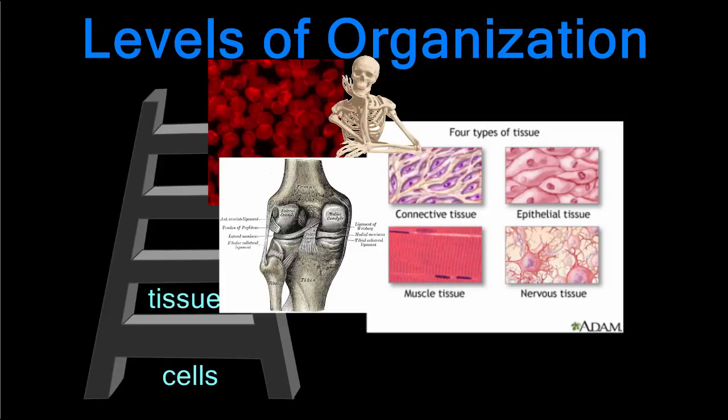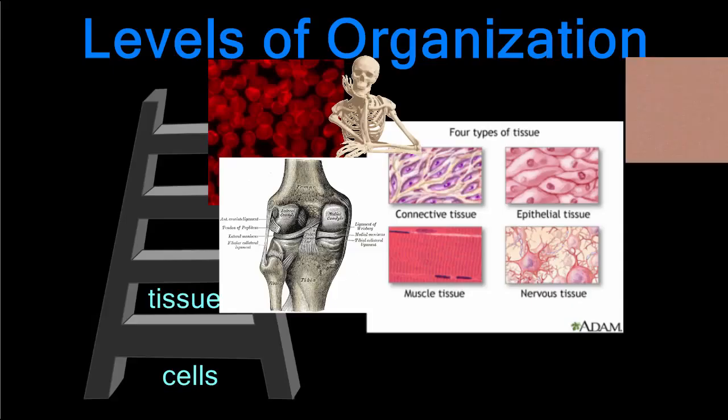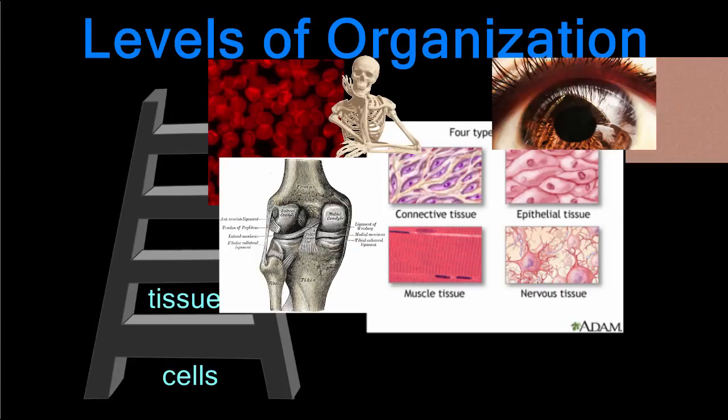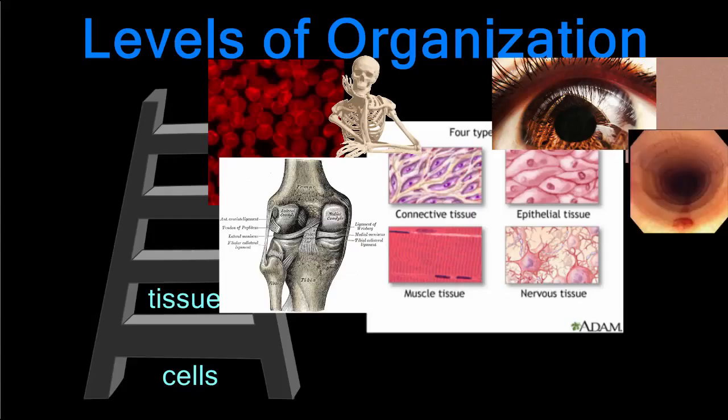Tissues are made up of specialized cells, and there are four major types of tissue. Blood is an example of connective tissue. Connective tissues also include bones, cartilage, ligaments, and tendons.